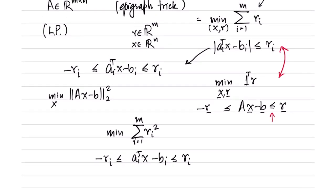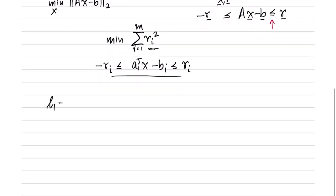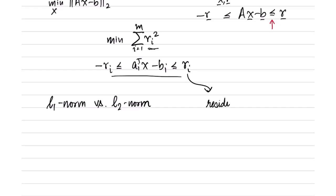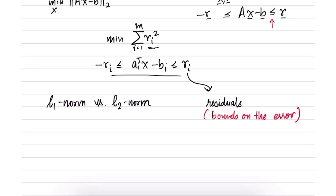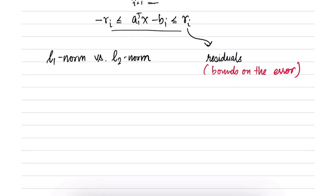Comparing with the L1 norm minimization problem, we have the same constraint but different objective functions. The objective function for L1 is summation of r_i, and for L2 it is summation of r_i squared. What does it mean to minimize the L1 norm versus the L2 norm? These r_i's can be seen as residuals — bounds on the error.